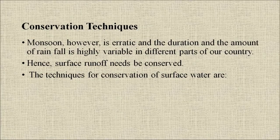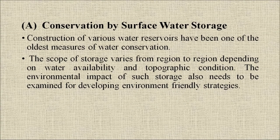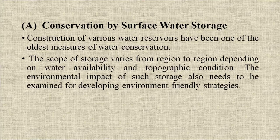The monsoon is erratic and the duration and amount of rainfall is highly variable in different parts of our country. Hence, surface runoff needs to be conserved. The first technique is conservation by surface water storage: construction of various water reservoirs has been one of the oldest measures of water conservation. The scope of storage varies from region to region depending on water availability and topographic conditions, and environmental impact of such storage needs to be examined.